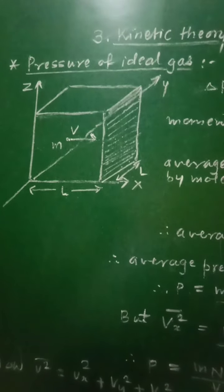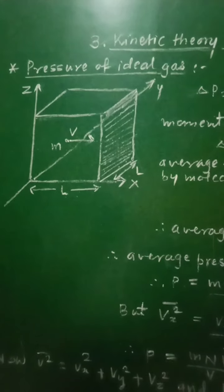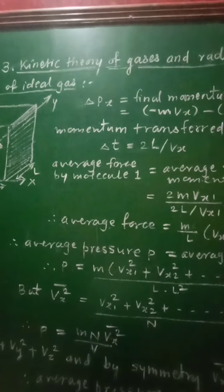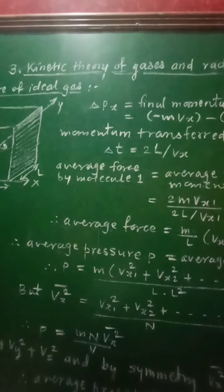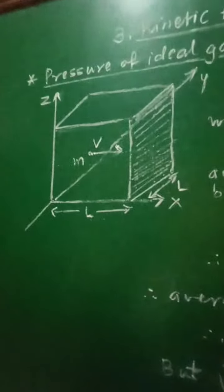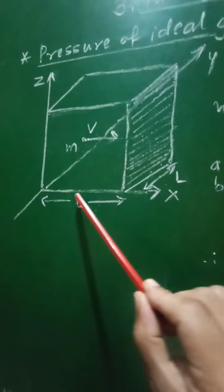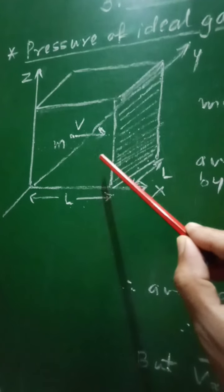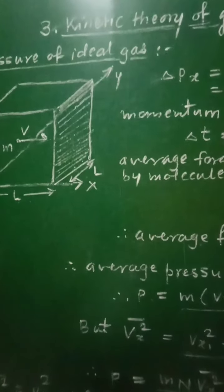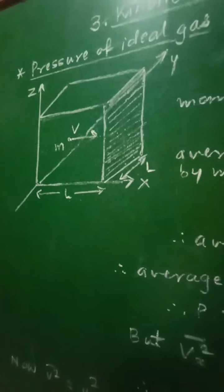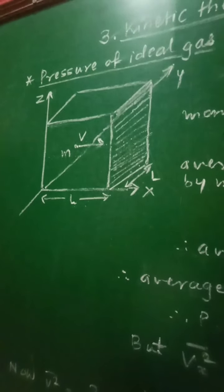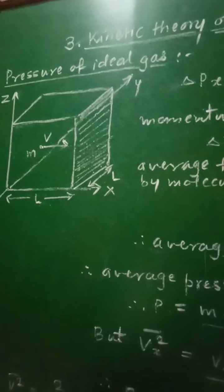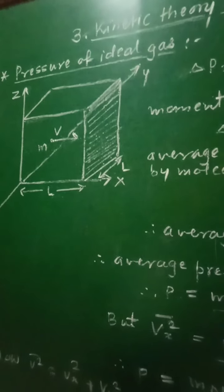We have to obtain the expression for the pressure exerted by the gas on the walls of the container. To obtain this expression, let us consider n moles of an ideal gas enclosed in a cubical box of volume V equal to L³. This cubical box has length of each side equal to L, so its volume equals L³. The temperature of the walls of the container is kept constant, equal to T. The gas molecules are continuously moving randomly in various directions, colliding with each other as well as with the walls of the box.